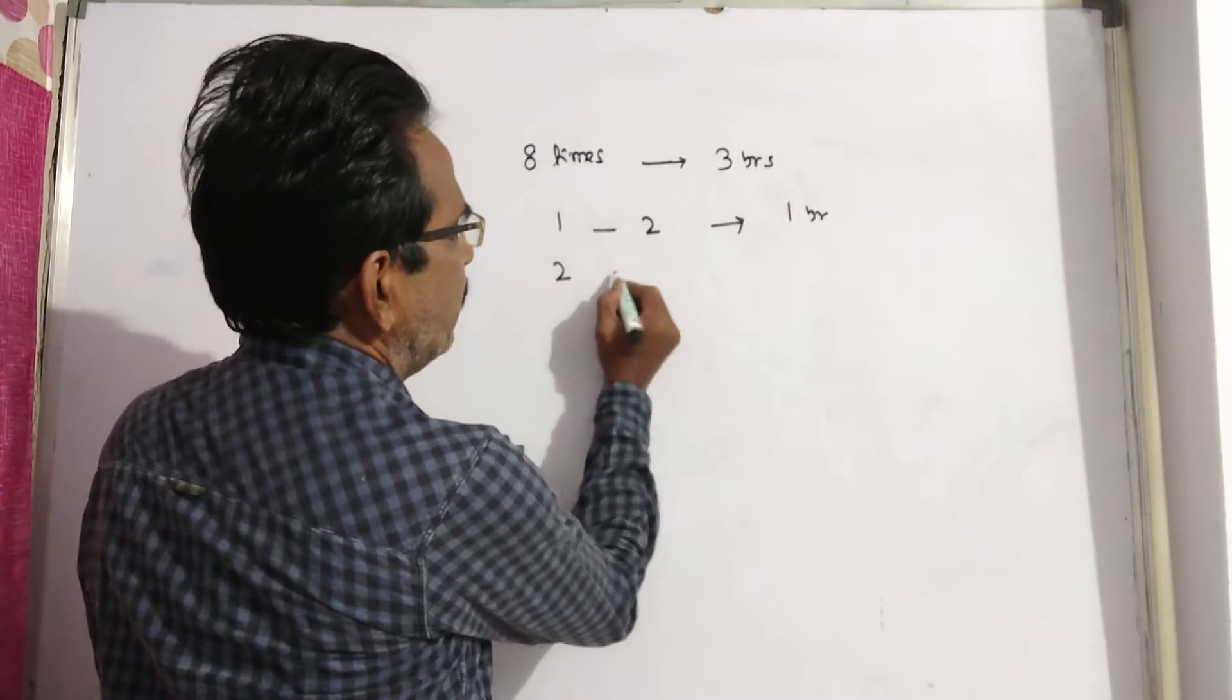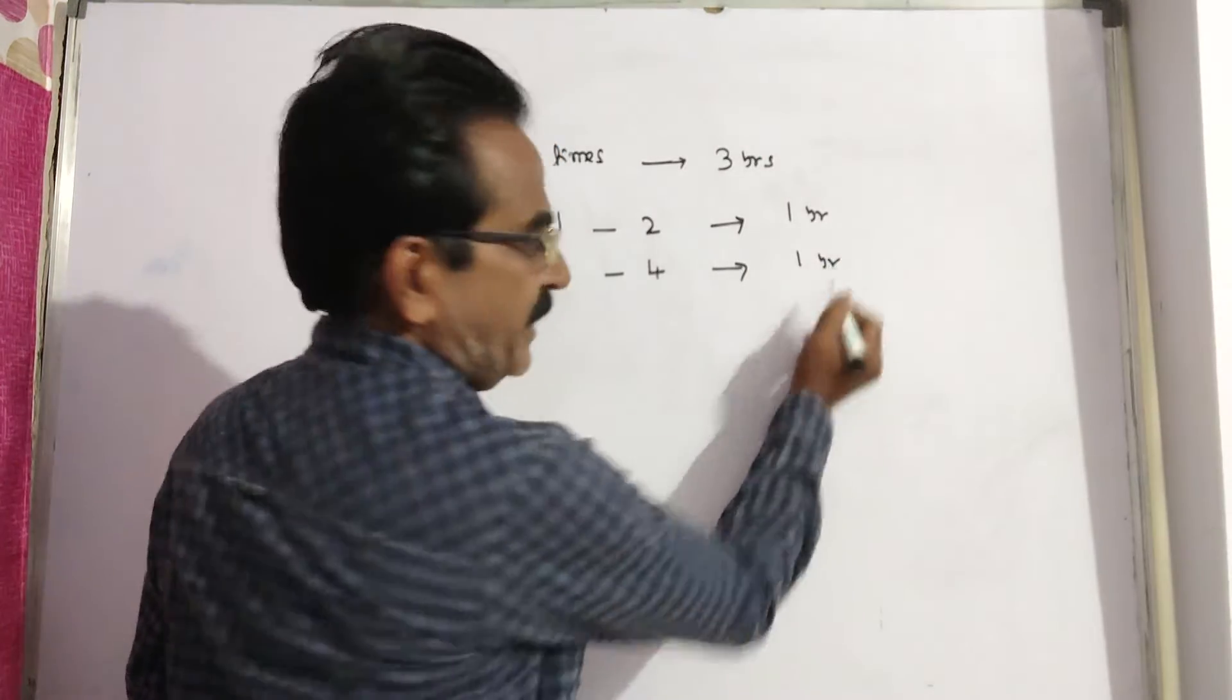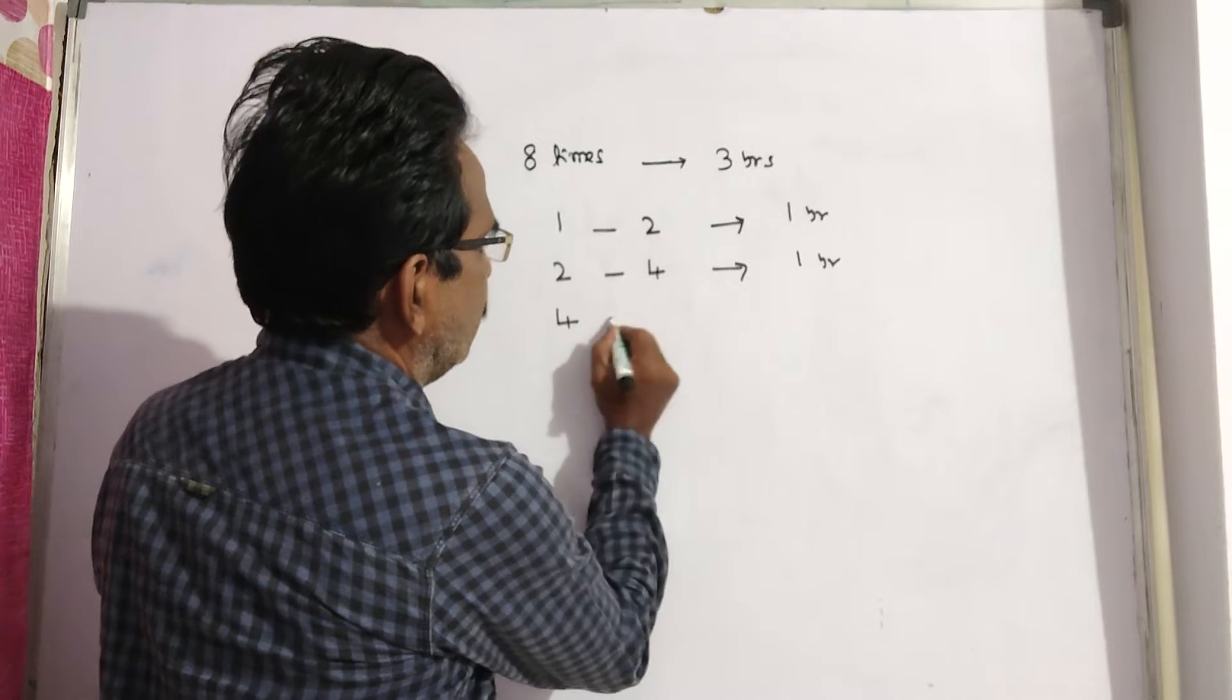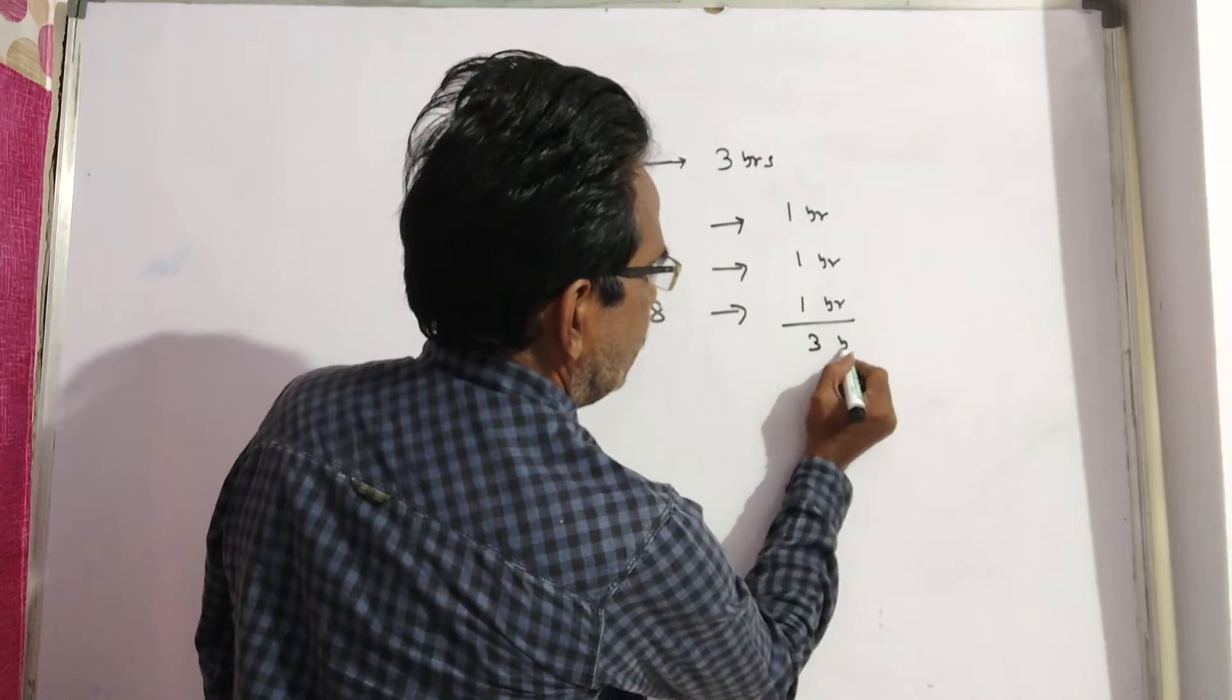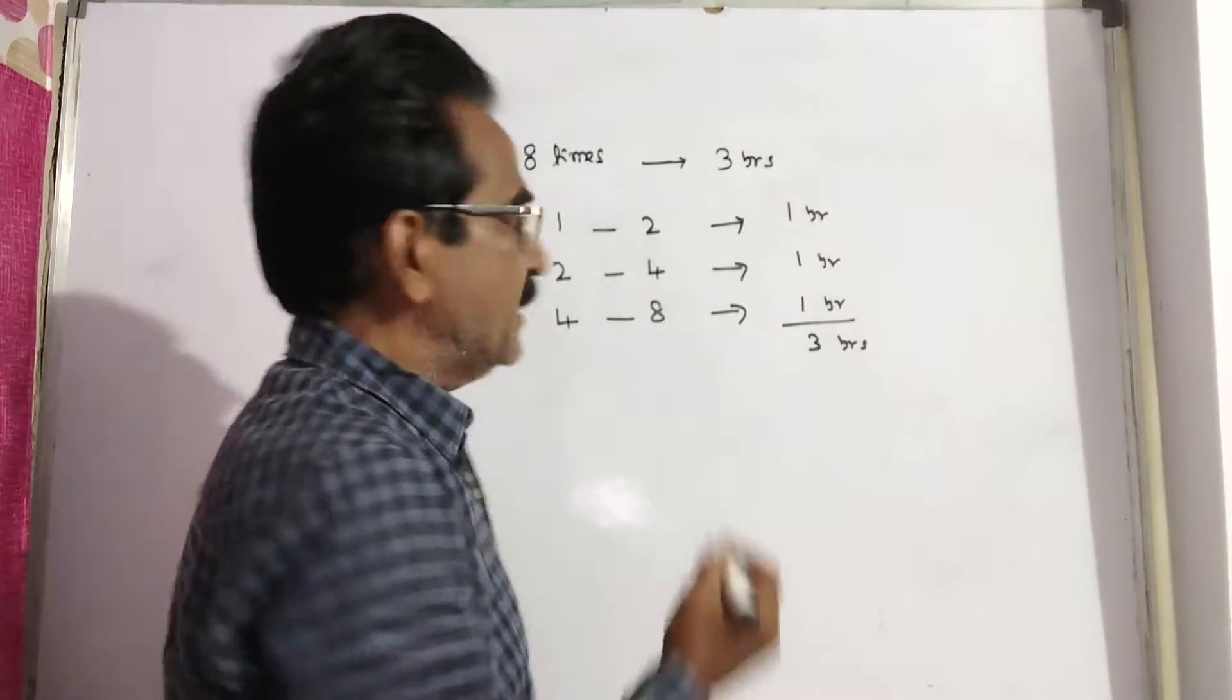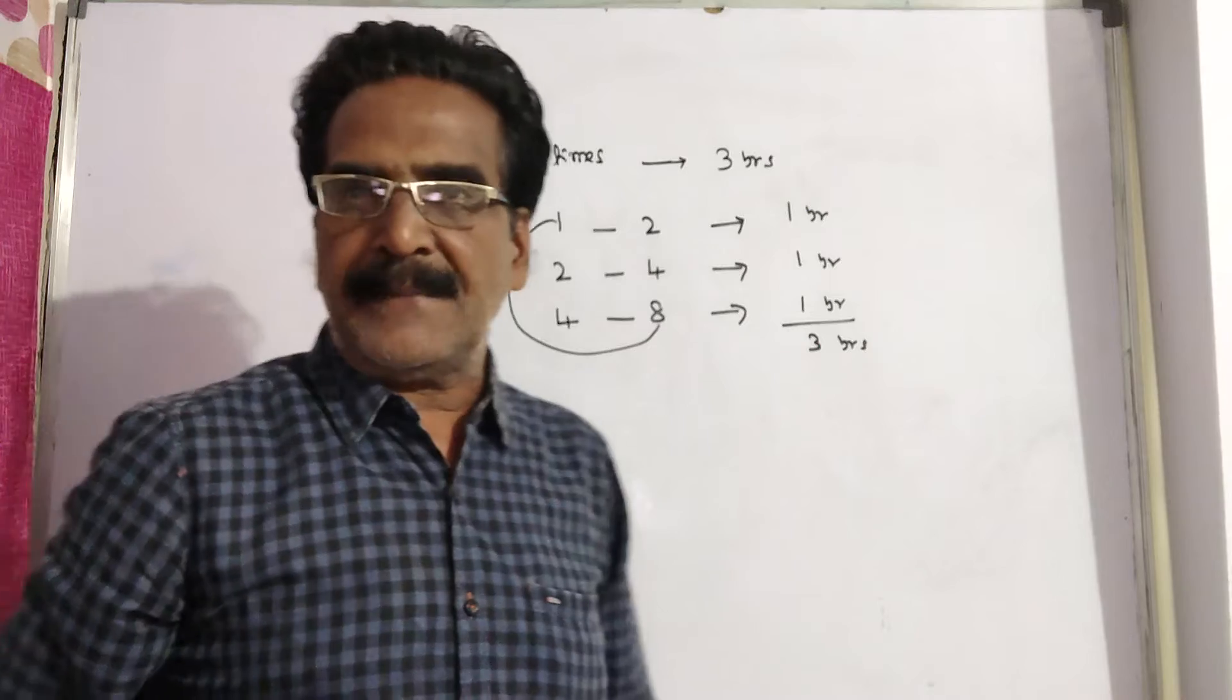And this 2 rupees becomes 4 in another 1 year. And again, this 4 becomes 8 in another 1 year. That means in a span of 3 years, in a time of 3 years, the amount becomes 8 times itself. 1 becoming 8.